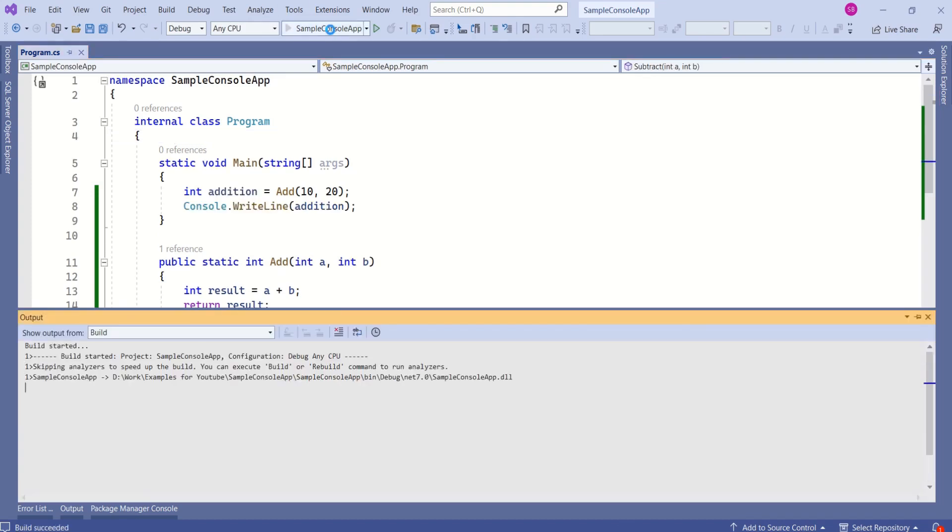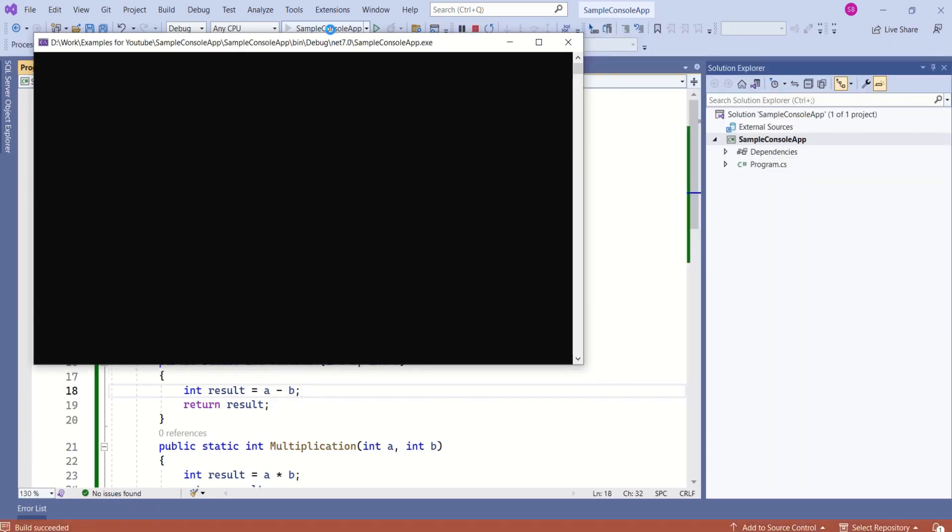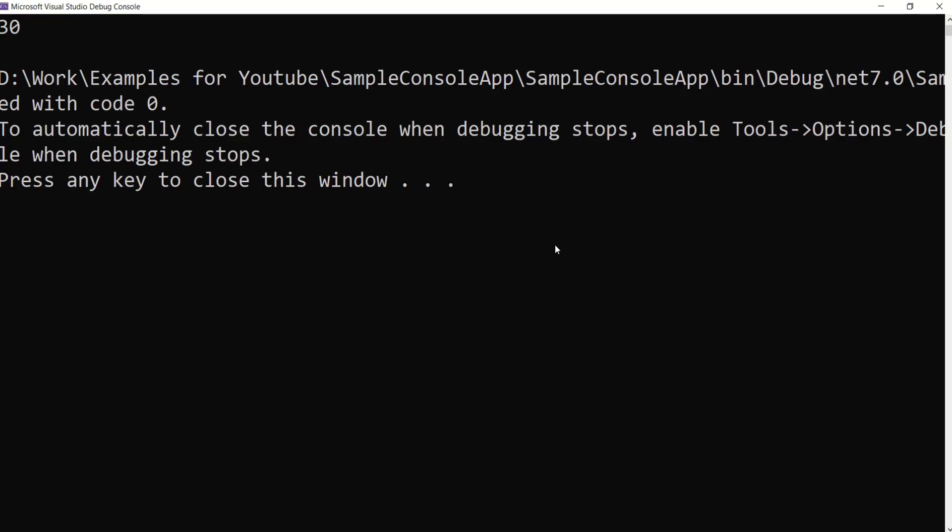When we run this application, operating system loads the CLR into memory and the CLR is responsible for managing the execution of this application. As the application starts executing, CLR uses a JIT compiler to translate the IL code into native machine code.